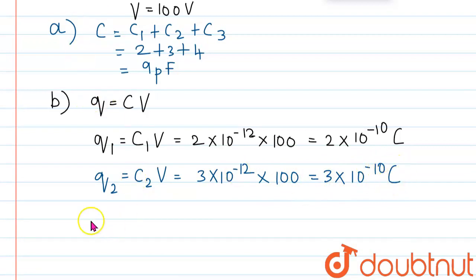And charge on capacitor 3 is given by the formula Q3 is equal to C3V. So, C3 value is 4 into 10 power minus 12 into V value is 100. Solving this, we get the value of Q3, that is, charge on capacitor 3 is found to be 4 into 10 power minus 10 coulomb. So, these are all the final answers, thank you.